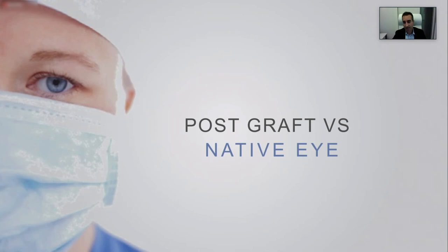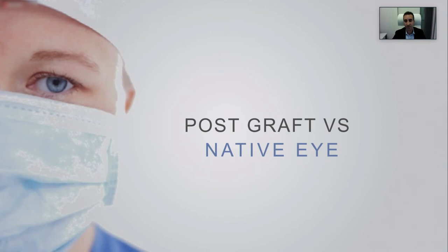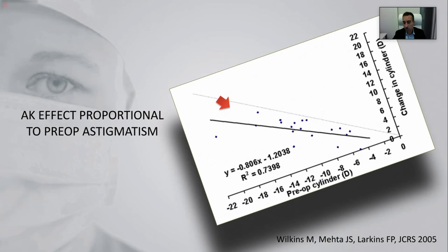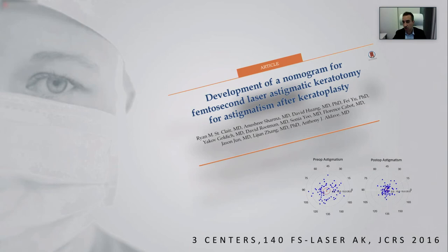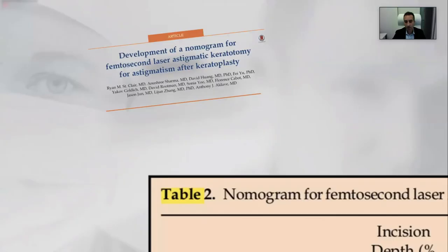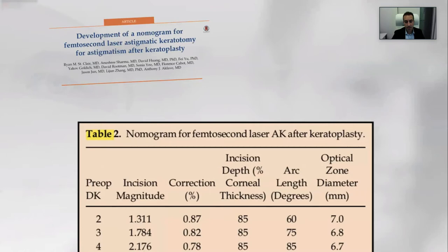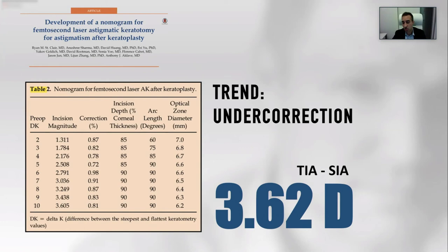Some of these astigmatisms are very irregular; some are a bowtie and others an irregular bowtie. Dealing with large astigmatism is a nuisance, and using femto-AK to address them is intuitive. However, there is a major difference between post-graft eyes and native eyes, as shown by Wilkins, Jod Mehta, and Larkins from Moorfields in 2005: unlike femto-AK in virgin eyes, femto-AK in graft eyes is proportionate to the preoperative astigmatism. The larger the astigmatism, the greater the effect of the arcuate keratotomy. The main available nomogram is from a multi-center study across three centers in Canada, California, and Florida — 140 eyes using the FS laser — which showed an undercorrection trend; the difference between target-induced and surgical-induced astigmatism was 3.62 diopters.